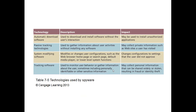Technologies used by spyware include: automatic download software, used to download and install software without user interaction, which can install unauthorized applications; passive tracking technology, which gathers information about user activities without installing software, collecting private information such as websites visited; system modifying software, which modifies user configurations such as the browser homepage or main search page without authorization; and tracking software, which monitors user behavior and gathers personal information that could be stolen or shared, resulting in identity theft and fraud.